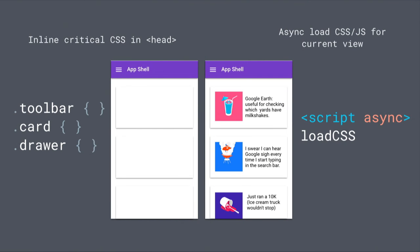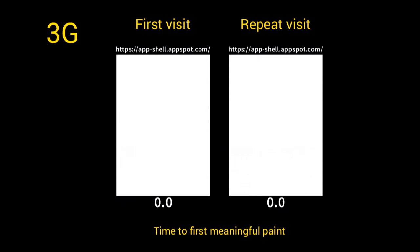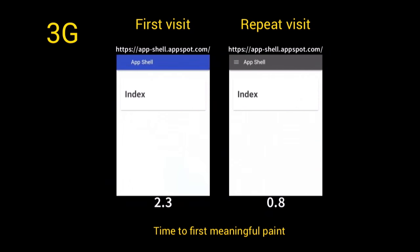If the application shell architecture does make sense for your app, the way you achieve improvements in addition to Service Worker is by relying on critical path CSS — inlining the critical styles for your application shell in the document head, then asynchronously loading in the CSS and JavaScript needed for the current view. We can use the async attribute on scripts and libraries like loadCSS from the Filament Group. The performance wins of such a model are quite stark: on repeat view, it's almost instant compared to the first visit where it took much, much longer.